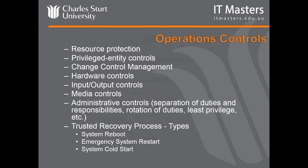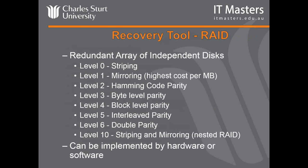We do that using a variety of operational controls: privilege protection — looking at what people can and can't do — media controls, administrative controls, least privilege, separation of duties. We also need a trusted recovery process, looking at system boot, system emergency restart, system cold start. We've covered different levels of RAID — level 0 to level 10 — and you need to know all these different terms: double parity, interleaved parity, and all that sort of stuff. We can do this either by hardware or software.